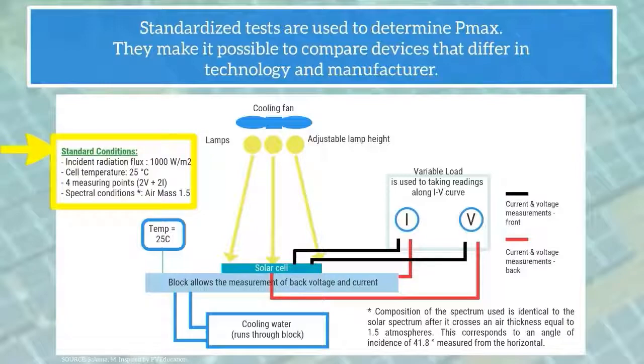These tests are carried out under the following standardized conditions. An incident radiation flux of 1000 watts per meter squared. A solar cell temperature of 25 degrees Celsius.